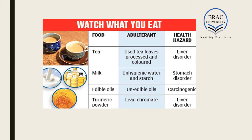Looking at this slide, we can see examples of adulteration in our day-to-day foods. Tea is adulterated with used tea leaves that are processed and colored to look like original tea leaves, which can cause liver disorder. Milk is adulterated with unhygienic water and starch, posing serious health hazards and stomach disorders. Edible oil is adulterated with inedible oils and is highly carcinogenic. Even turmeric powder is adulterated with lead chromate, which can also cause liver disorder.